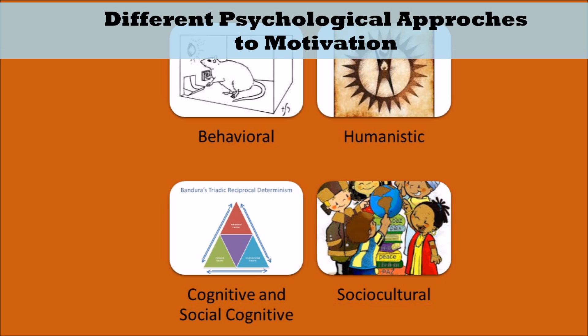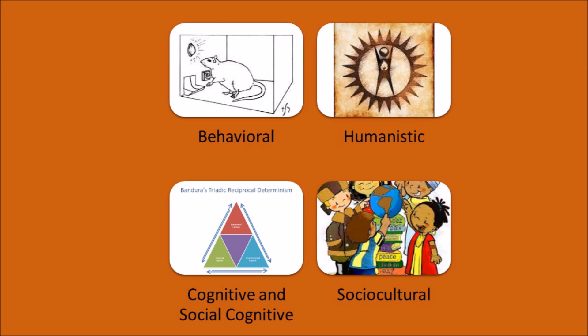Next, I'm going to start talking about the different psychological approaches to motivation. The first is the behavioral approach, which focuses on visible changes in behavior that result from experiences in the environment, specifically rewards and punishments that would either increase or decrease the behavior — known as operant conditioning. The humanistic approach believes that humans are inherently good and striving to reach their full potential, so motivation is driven by this desire to fulfill their true potential as human beings.